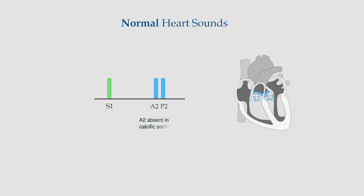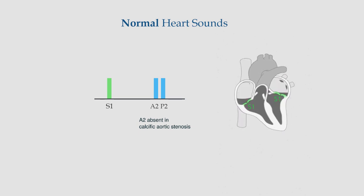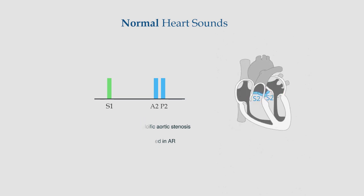The aortic component of S2 is sometimes quiet or absent in calcific aortic stenosis and reduced in aortic regurgitation. On the other hand, the aortic component is loud in systemic hypertension, and the pulmonary component is increased in pulmonary hypertension and atrial septal defect.